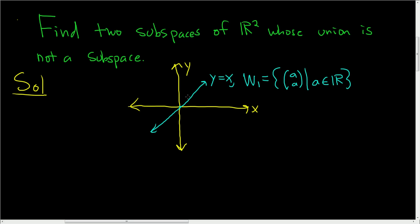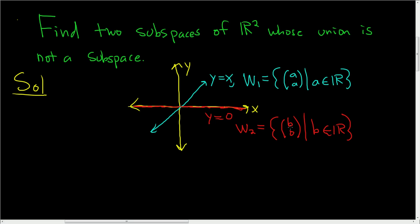Let's think of another simple subspace — the line y equals zero, which is the x-axis. The red line is y equals zero, and let's call that subspace W₂. This is the set of all vectors whose second component is zero, written as {(b, 0) | b ∈ ℝ}. Again, it's very easy to show this is a subspace: it passes through the origin, contains the zero vector by setting b equal to zero, and is closed under vector addition and scalar multiplication.